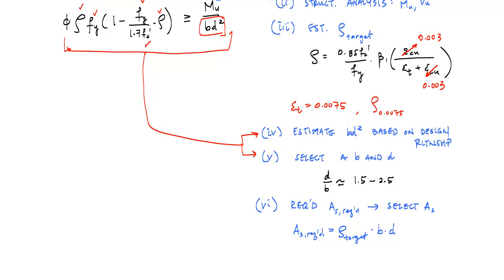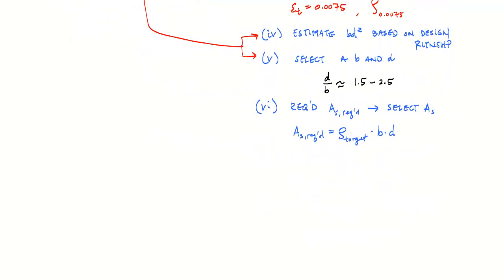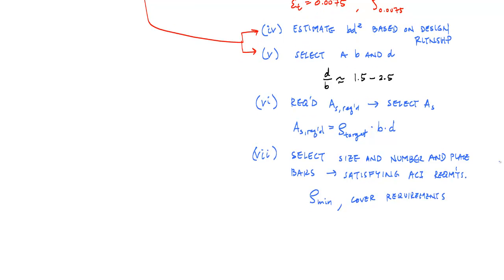And then you want to, seven would be to select size and number and place, satisfying ACI requirements. These are things like rho min, the minimum area of steel that you need, cover requirements depending on what your structure is exposed to, and just other considerations that you would have in terms of detailing the cross section. And once you've done that, you're pretty much done with the design. You have a B, a D, you've got an area, you've got a size and number of bars.